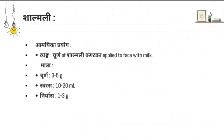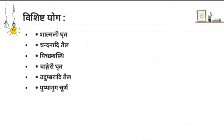Regarding Matra — dosage — when administering in Churna form, 3 to 5 grams is needed. When giving as Swarasa, 10 to 20 ml. When administering as Niryasa, 1 to 3 grams, to be given considering the condition and Agni Bala of the patient.